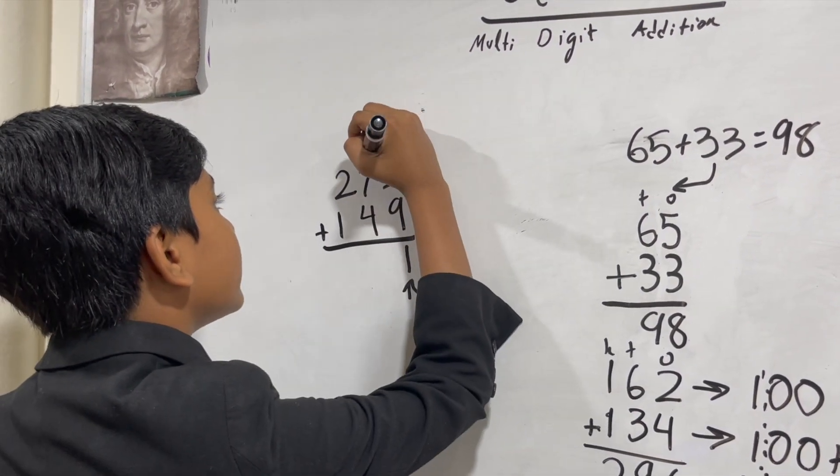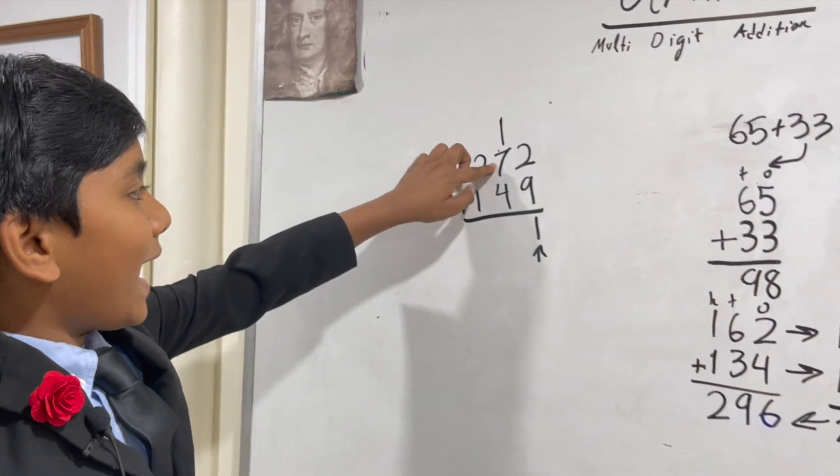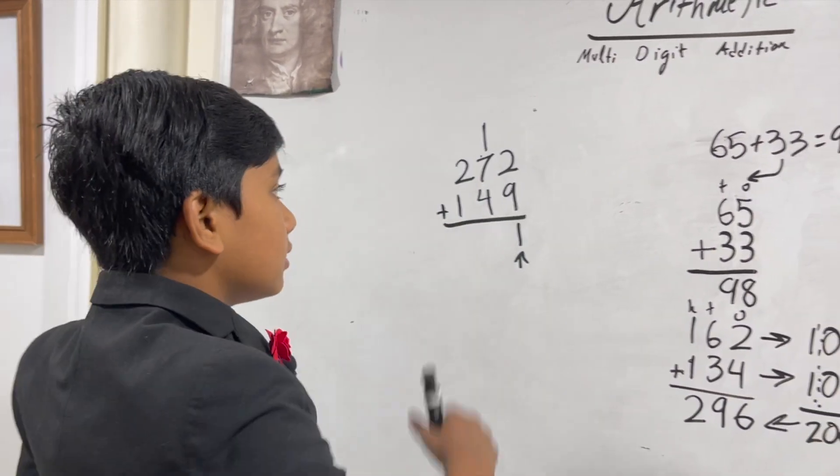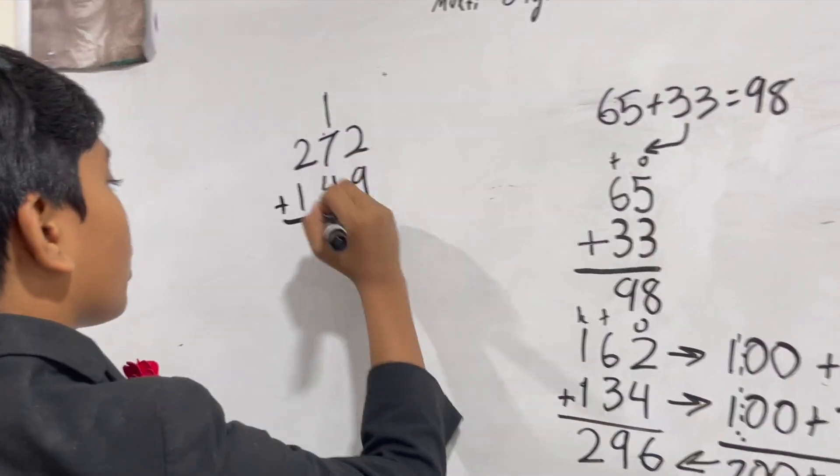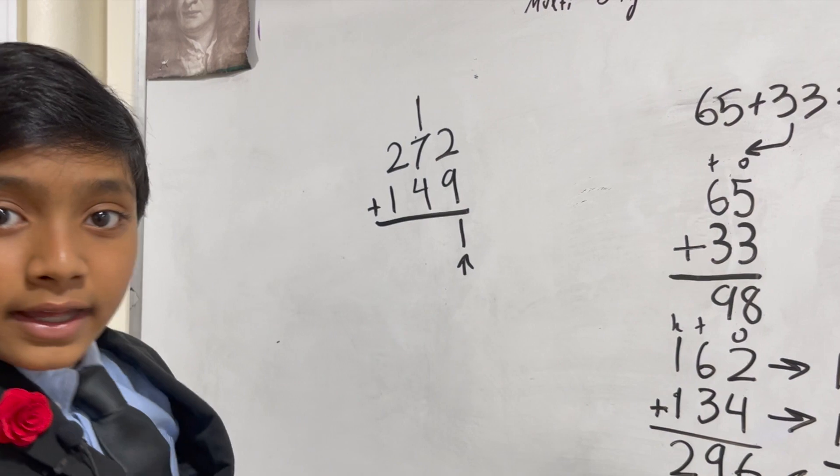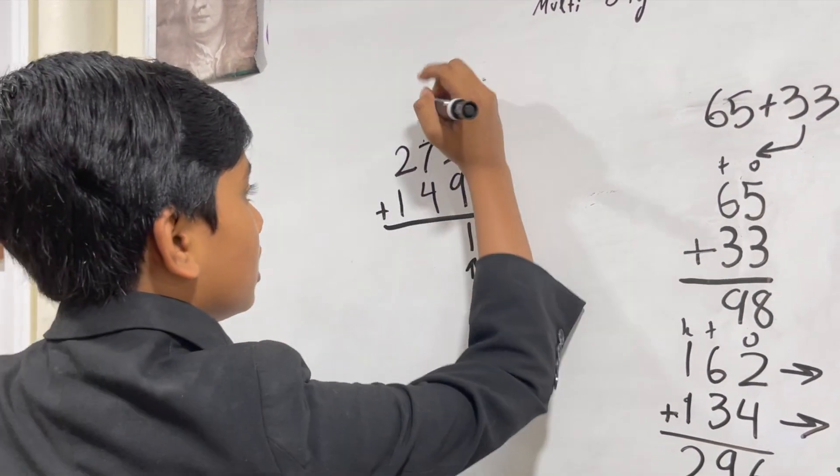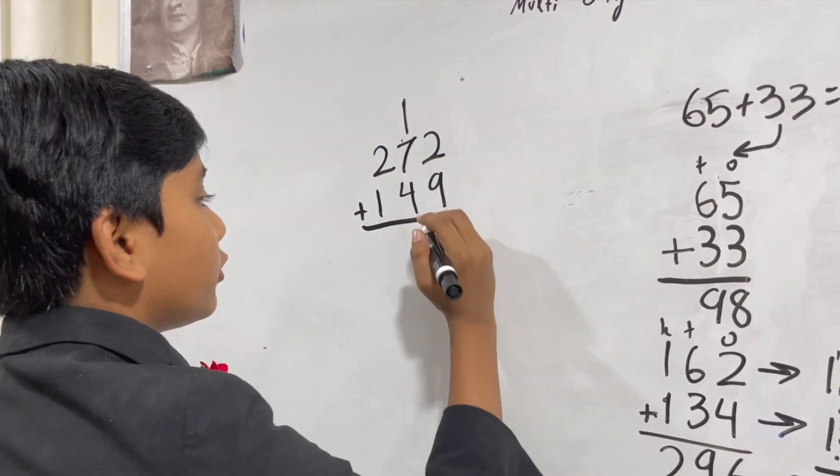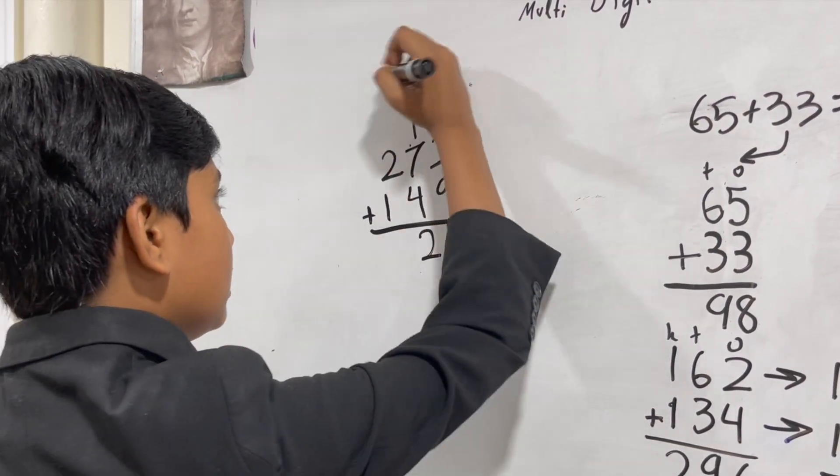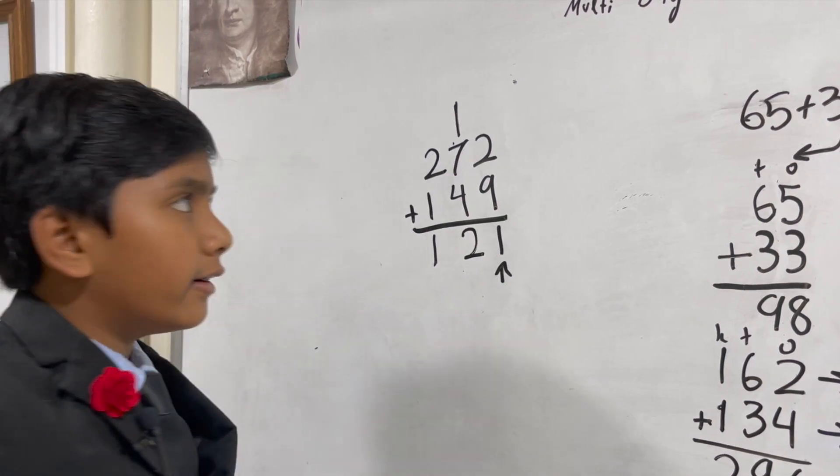So one plus seven plus four is, seven plus four is eleven, plus one is twelve. But oh no, 12 is another two digit number. Lucky for us, all we need to do is repeat the procedure and put the one in the hundreds place upwards.